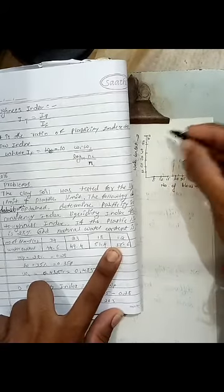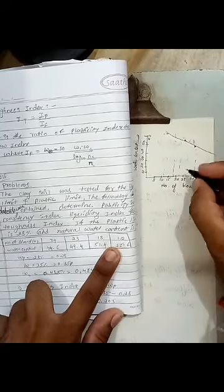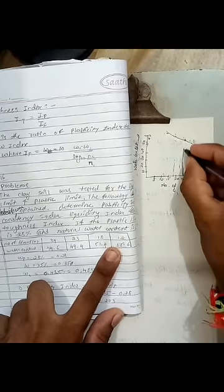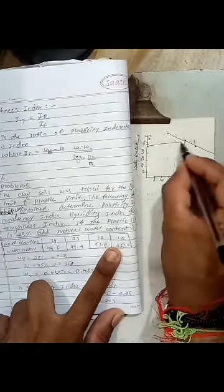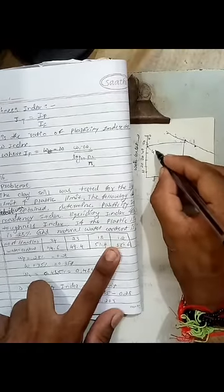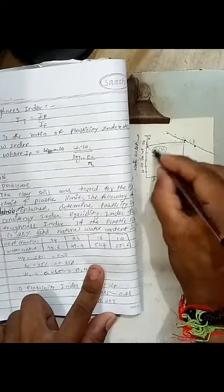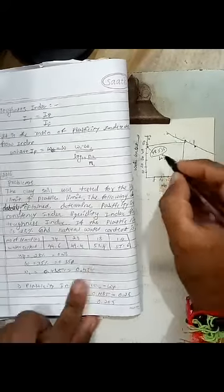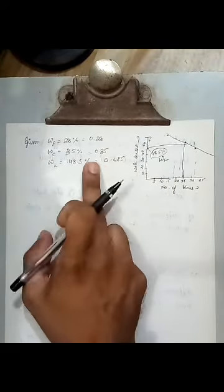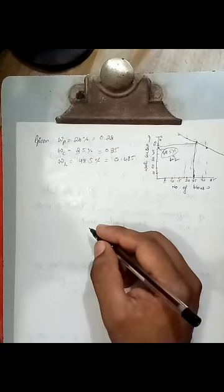For 12 here, it is 55 over here. The graph will come like this. Now for 25 corresponding blows you have to find out the value of water content. So this is 48.5 percent is liquid limit. So this value whatever we have written is from this graph. For 25 blows, corresponding value will be your liquid limit.